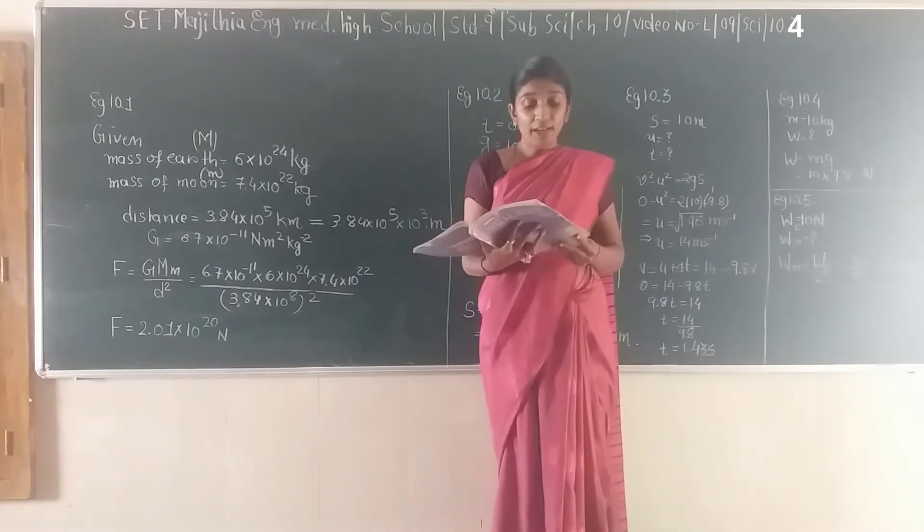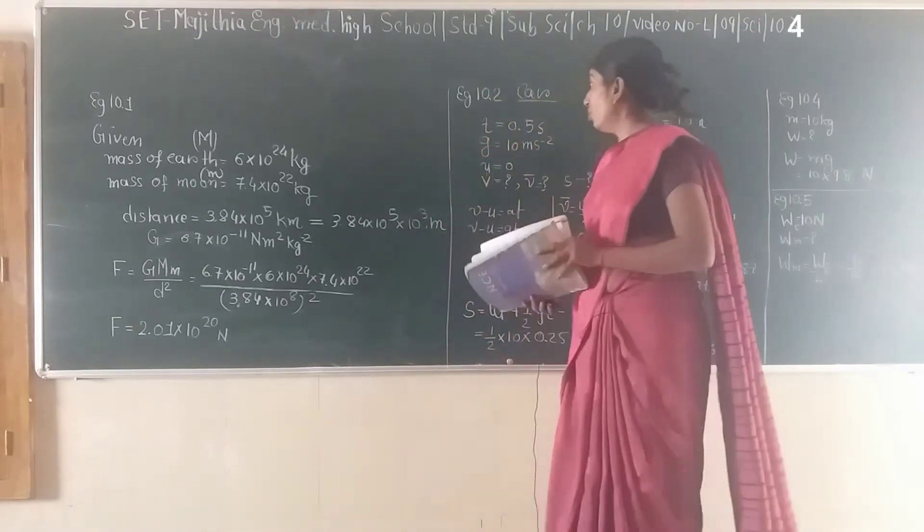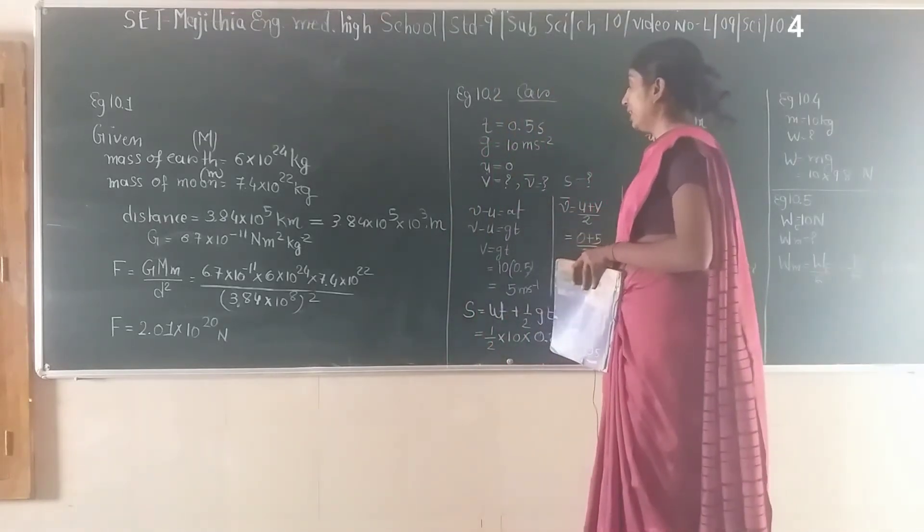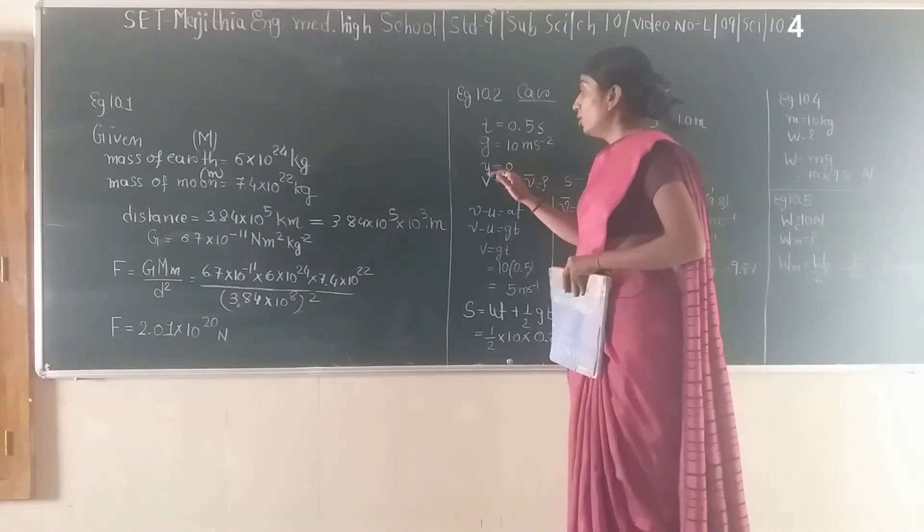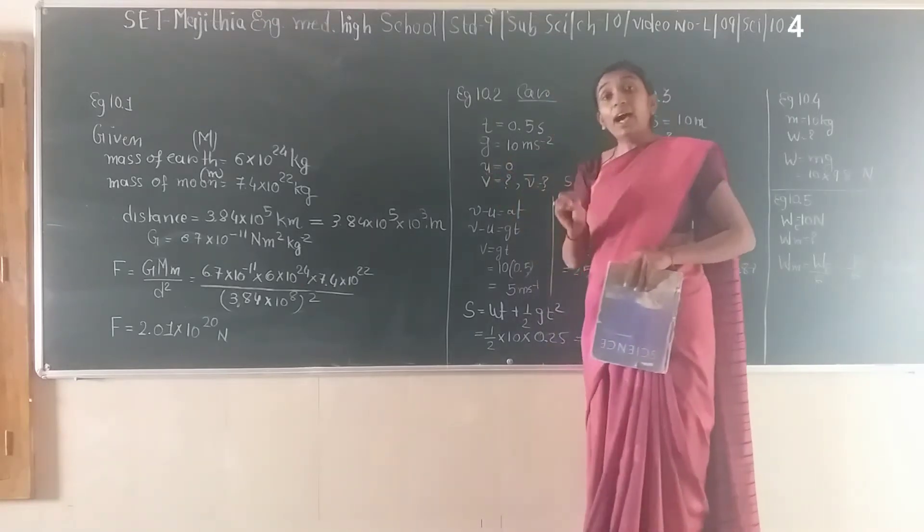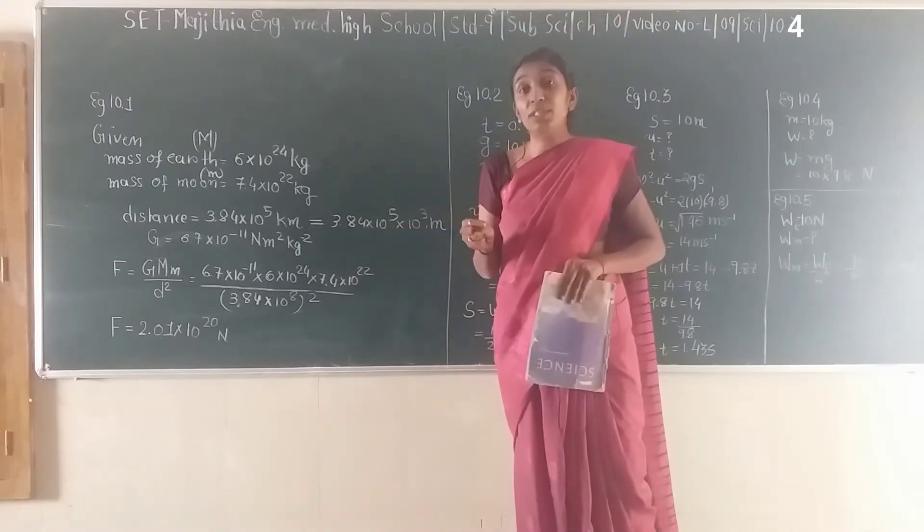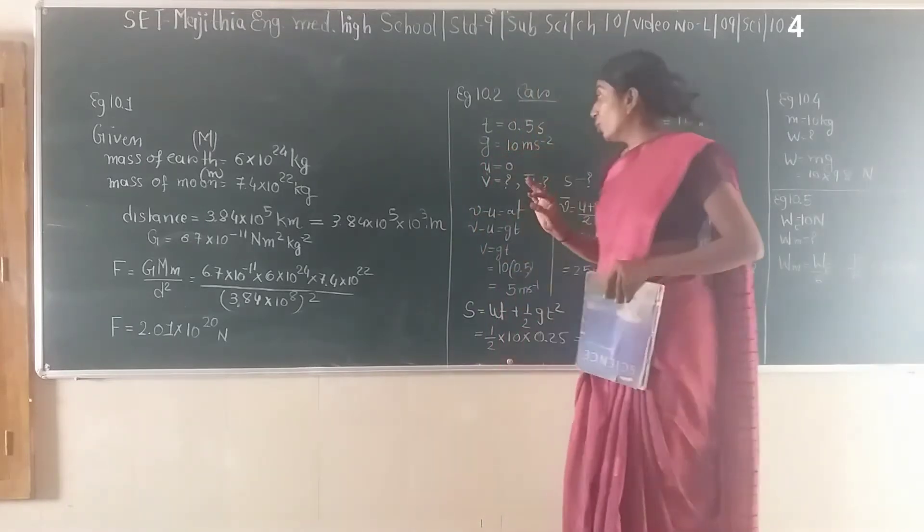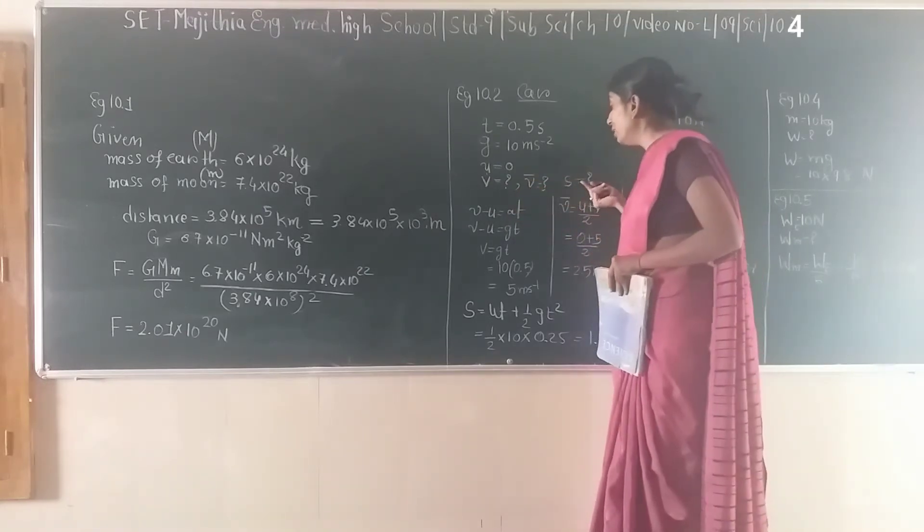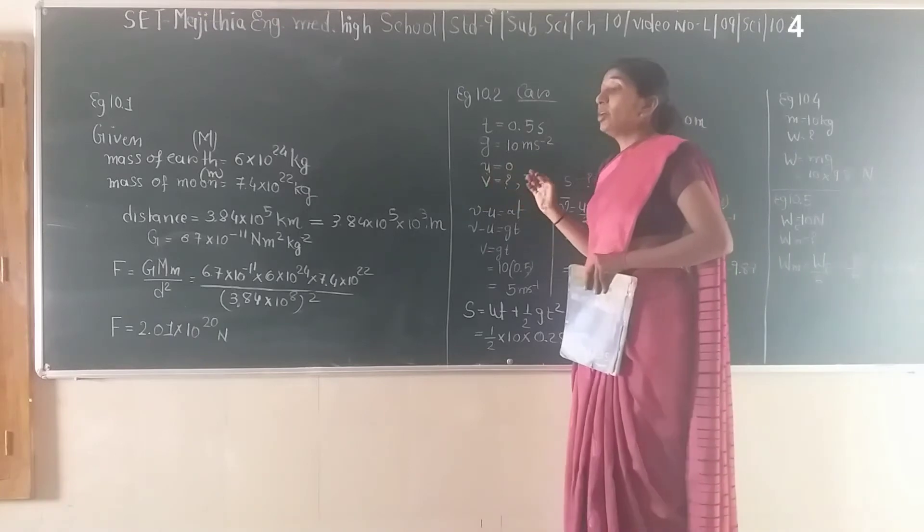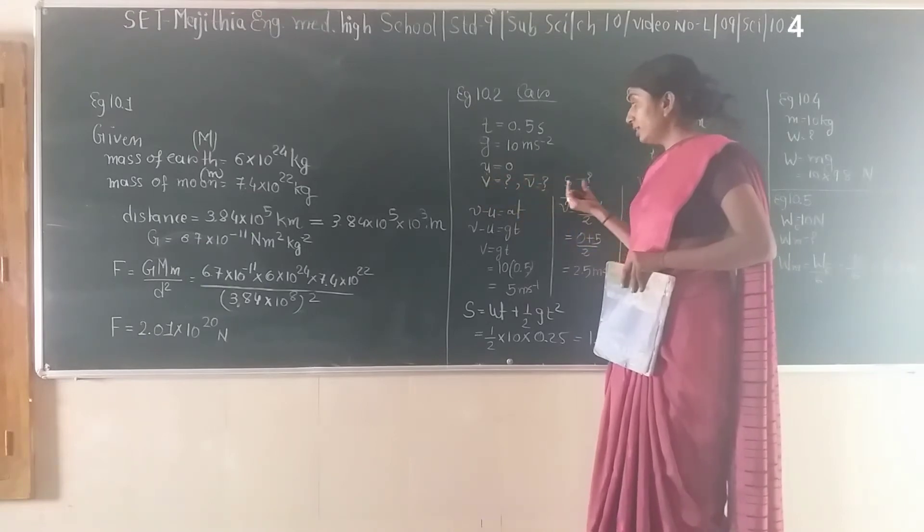So let us answer them. Given: t = 0.5 seconds, g = 10 m/s², u = 0 because the object is dropped freely without any initial push, so initial velocity should always be zero. We need to find v (final velocity), average velocity, and distance traveled by the car.